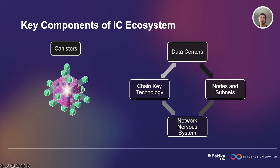Next, we have nodes and subnets. Nodes are individual computers that run the Internet Computer Protocol and execute the software deployed on the network. Nodes are grouped into subnets, which are collections of nodes that work together to provide a specific service or functionality. Subnets can communicate with each other through message passing and can scale up or down depending on demand. Subnets are also responsible for ensuring the security and reliability of the network by validating transactions and reaching consensus. It's important to mention that node providers are not equal to data centers — node providers host their nodes within data centers, but the data centers themselves don't usually run nodes; they just rent out rack space to the node providers. There can be multiple different node providers within one data center.